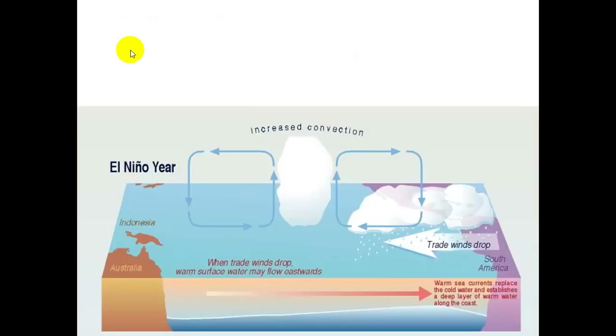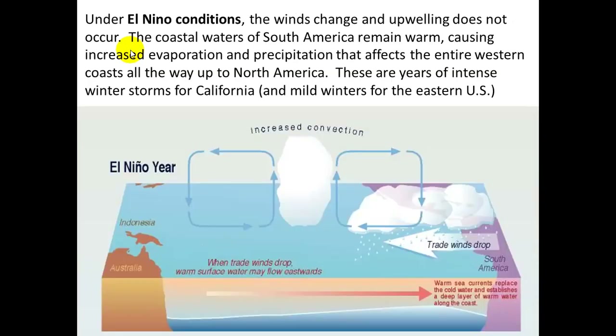Under El Niño conditions, the winds change and upwelling does not occur. The coastal waters of South America remain warm, causing increased evaporation and precipitation that affects the entire western coast, all the way up to North America. These are years of intense winter storms for California and mild winters for the eastern U.S.